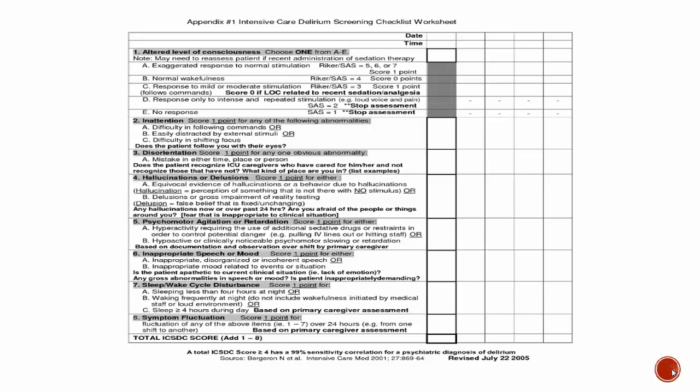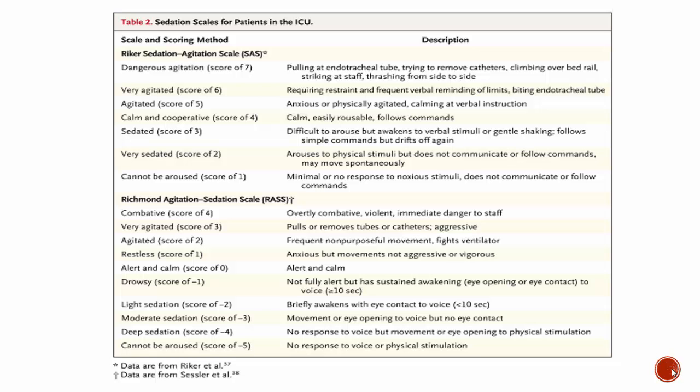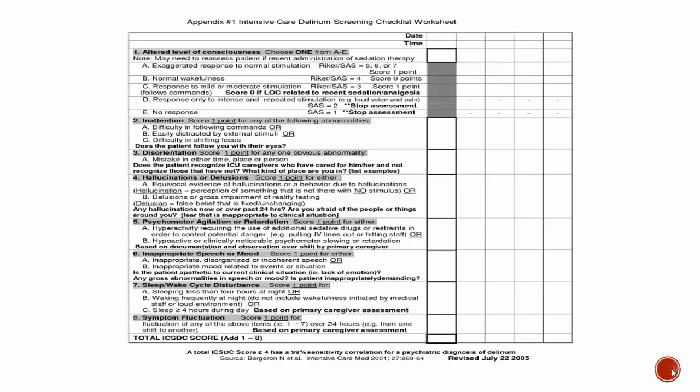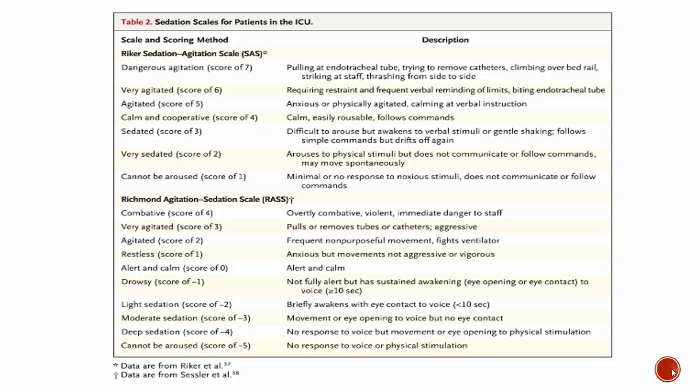The ICDSC takes into account the sedation score, disorientation, hallucinations, psychomotor agitation, inappropriate speech, and fluctuation of symptoms. A score of four has a 99.7% sensitivity correlation for the diagnosis of delirium. For sedation, we use the RASS score here — the goal is to have patients calm and cooperative, though there is a broad scale of how patients can present.